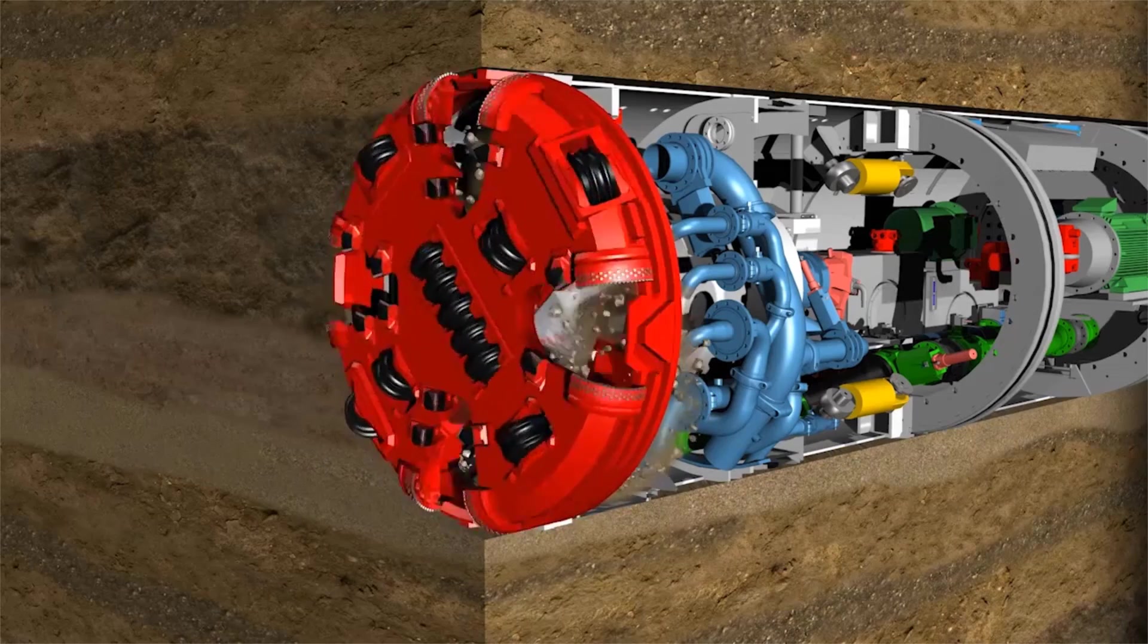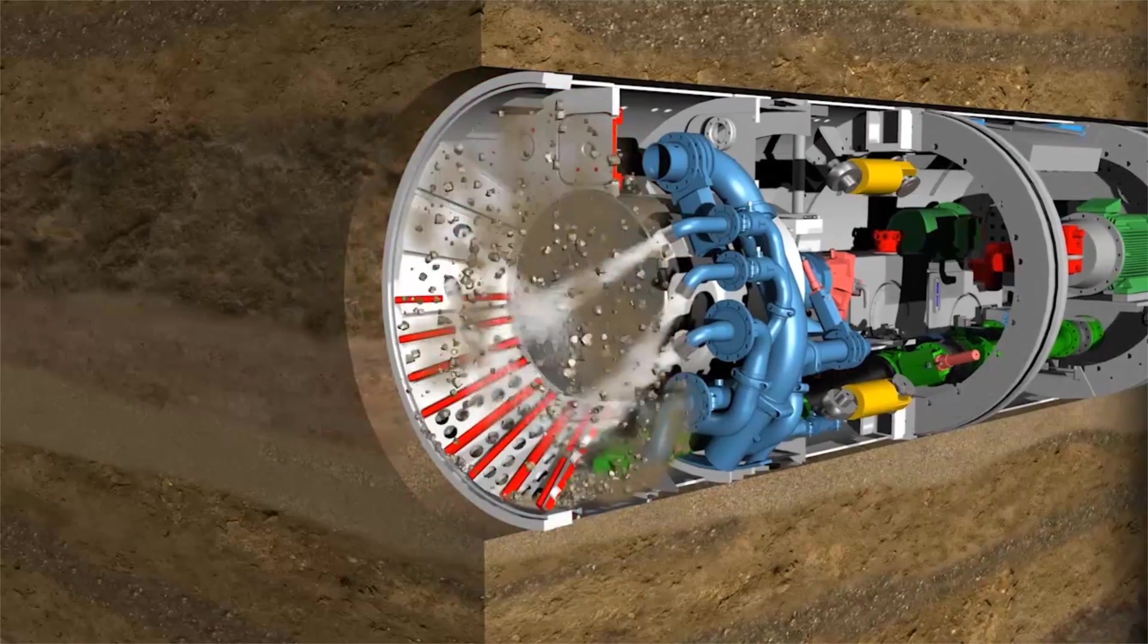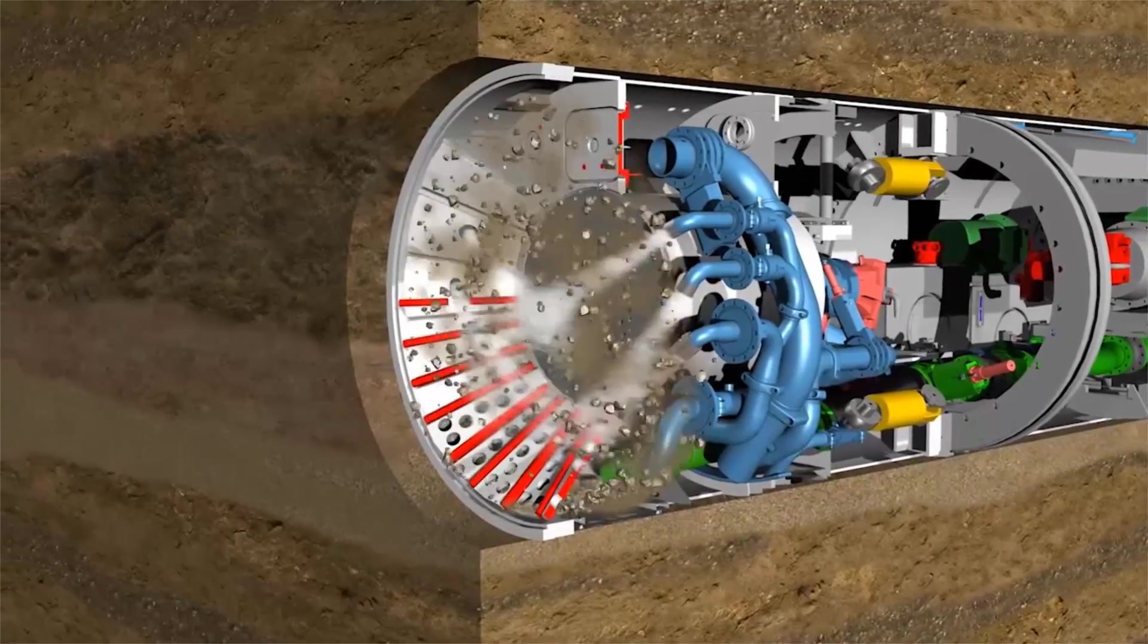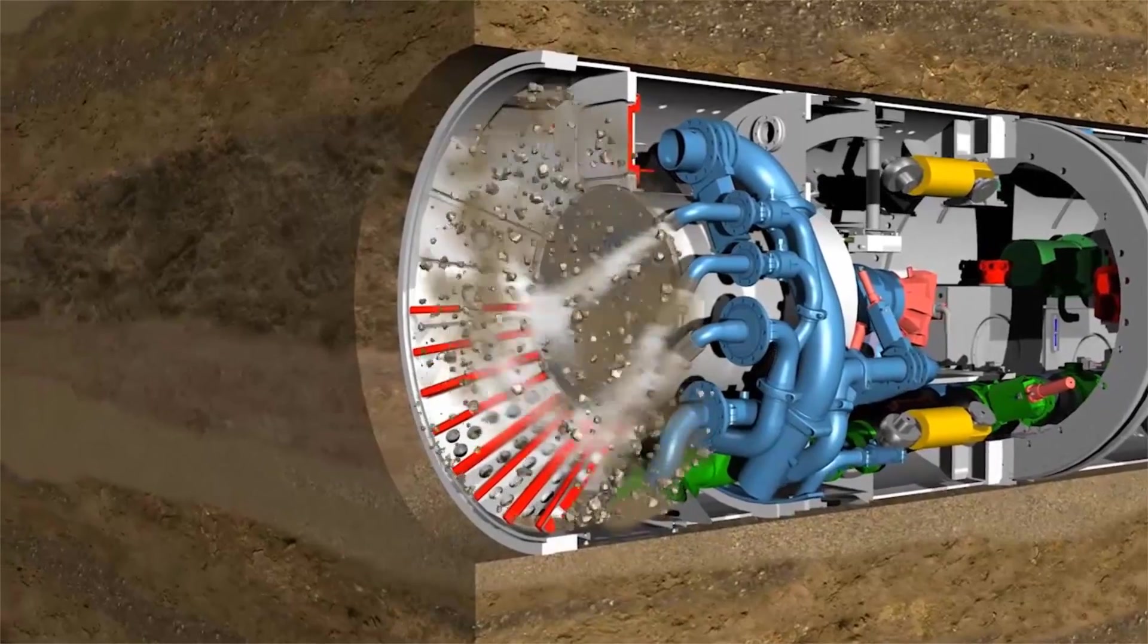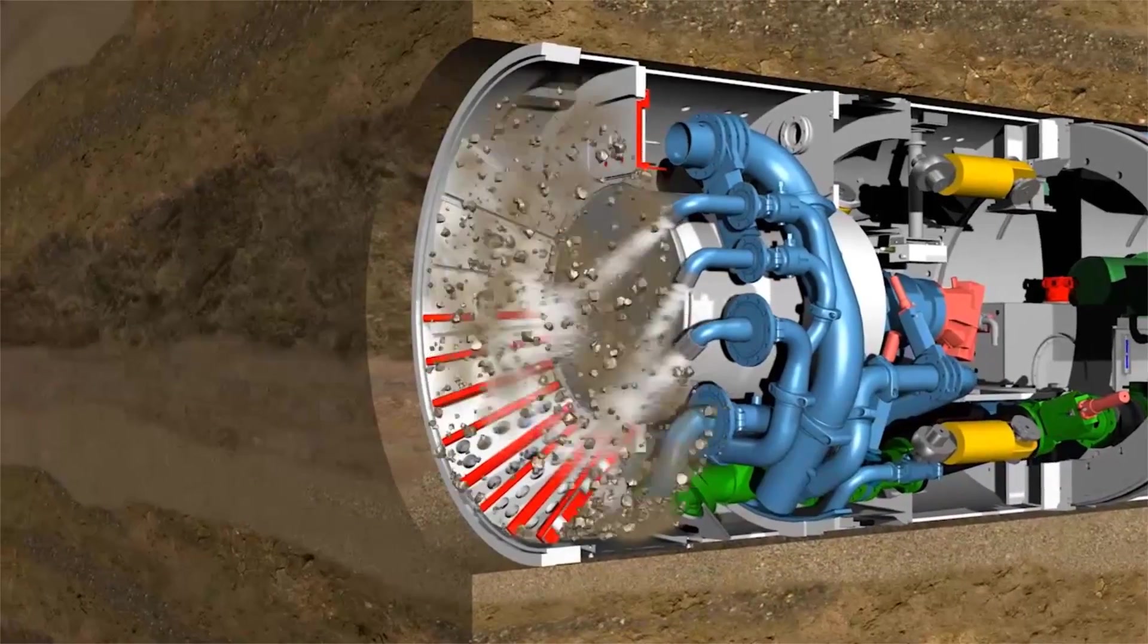Through a nozzle system in the shield, the liquid is returned to the excavation chamber. A closed slurry circuit is thus created, resulting in a continuous advance.